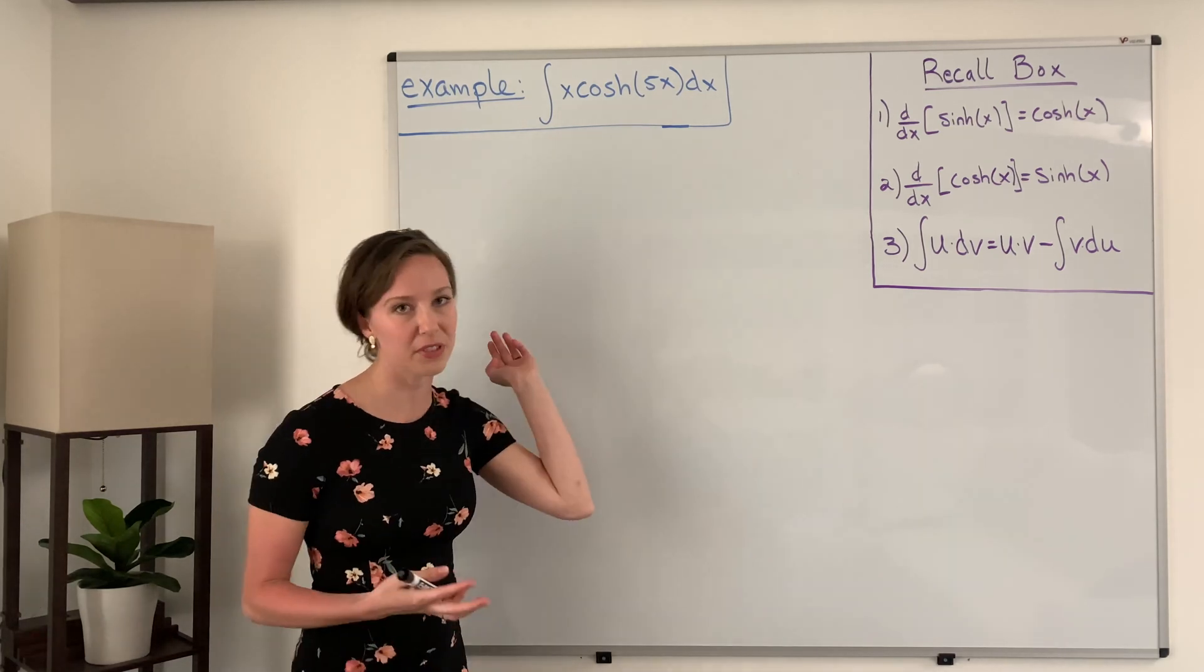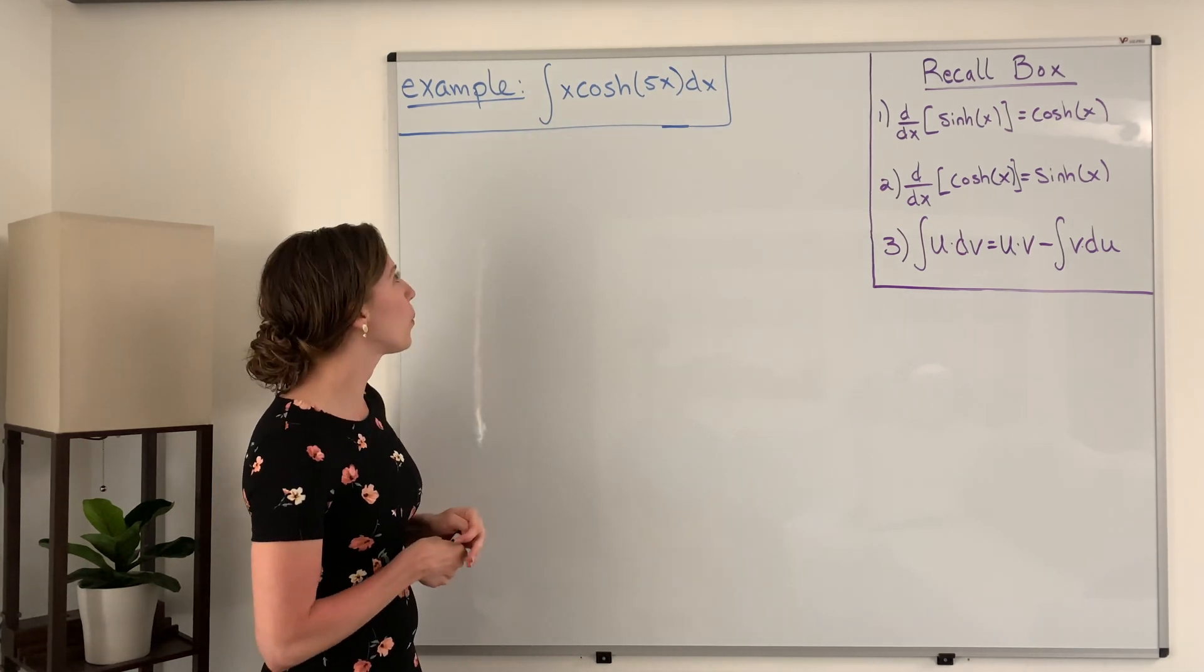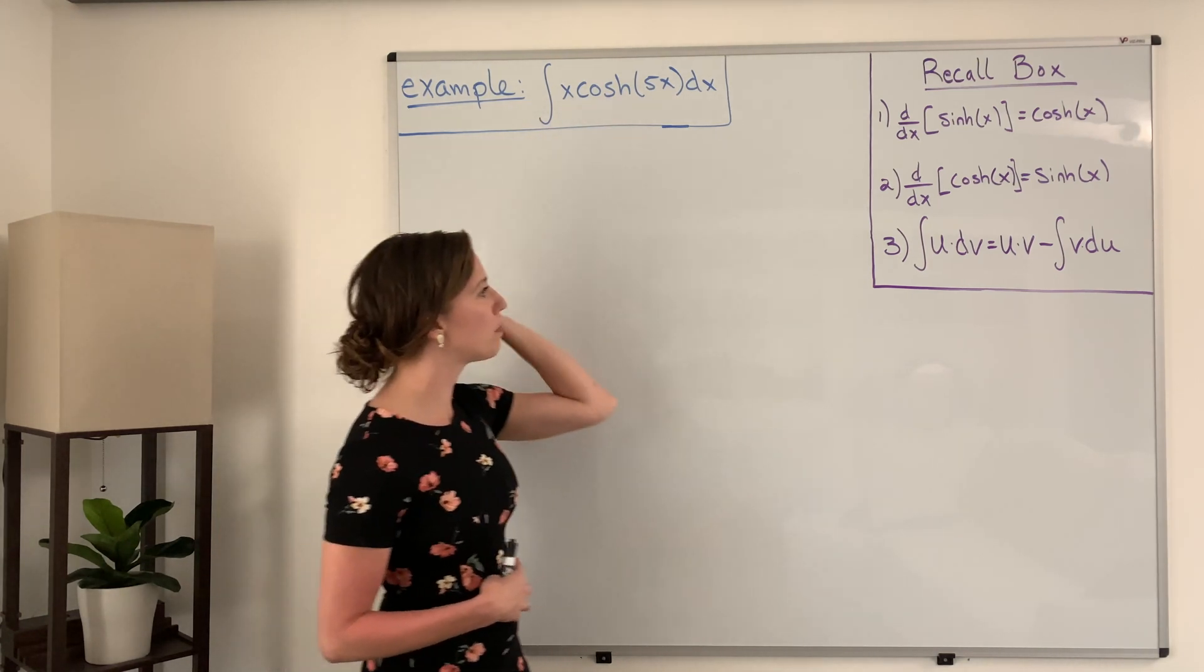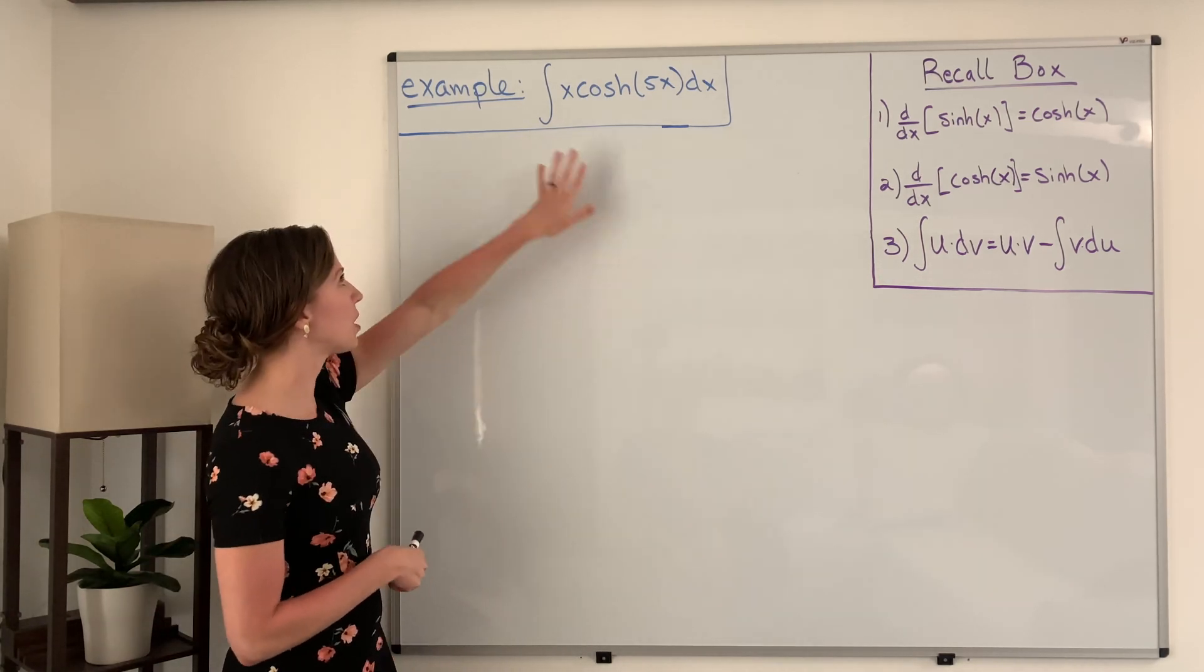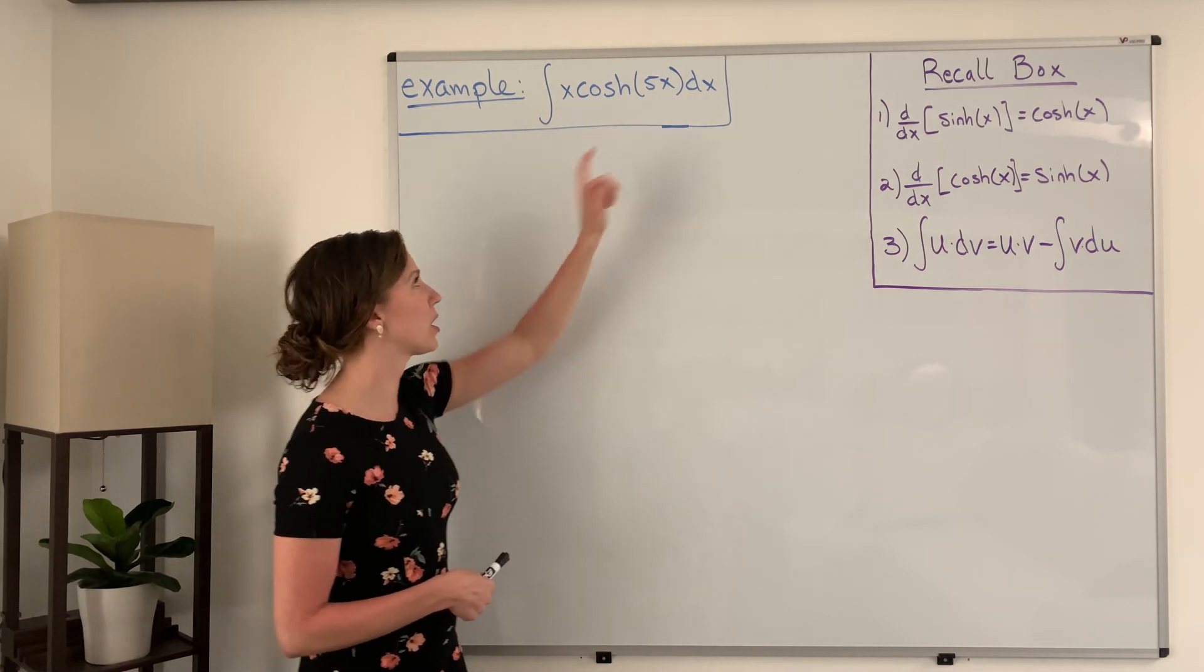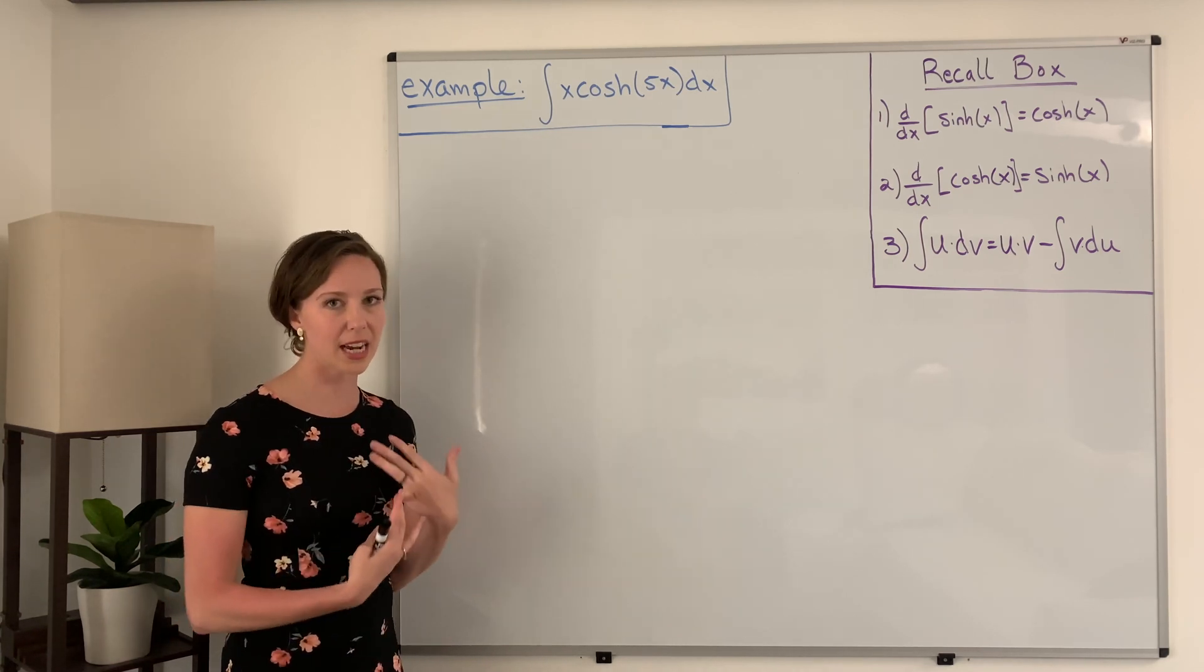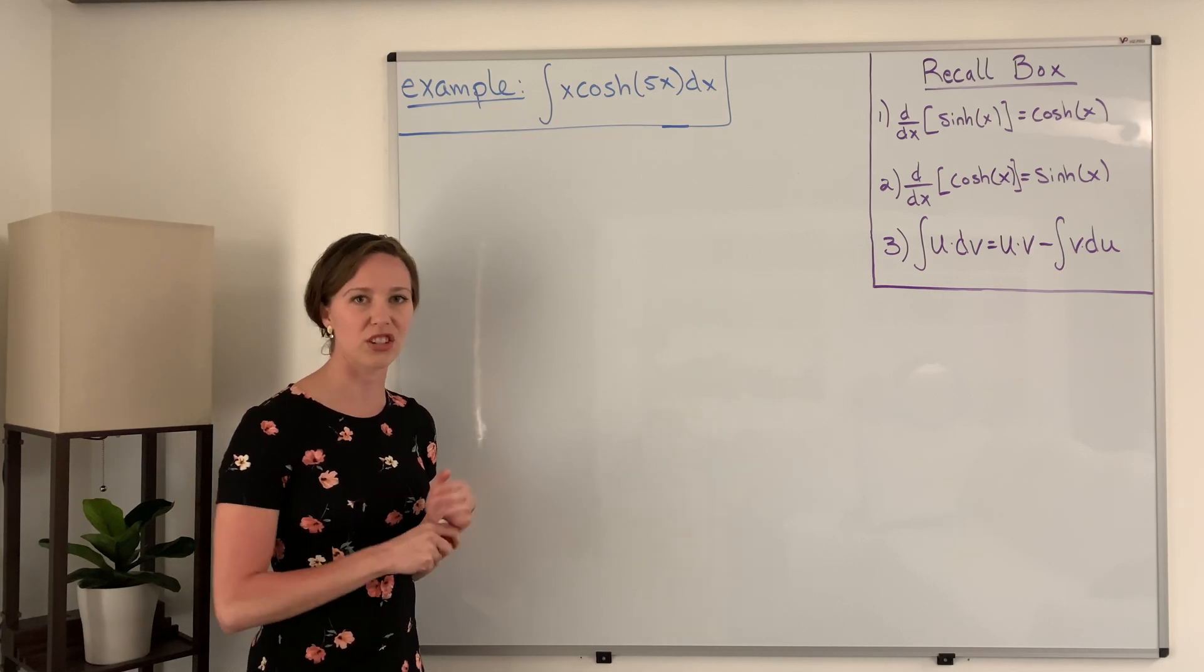Well, a good rule of thumb is to look at the function that we're taking the integral of, and whenever we have a product of two functions or maybe more, then using integration by parts could be helpful. And so in this function we have x times the hyperbolic cosine of 5x dx, and so there we can see we have two separate functions being multiplied together, and so that might be a problem that we can use integration by parts to solve.